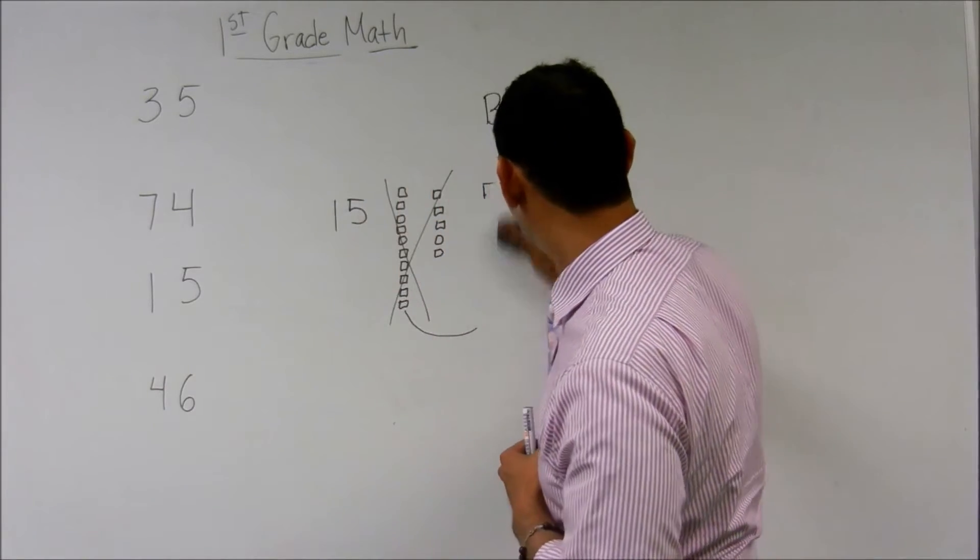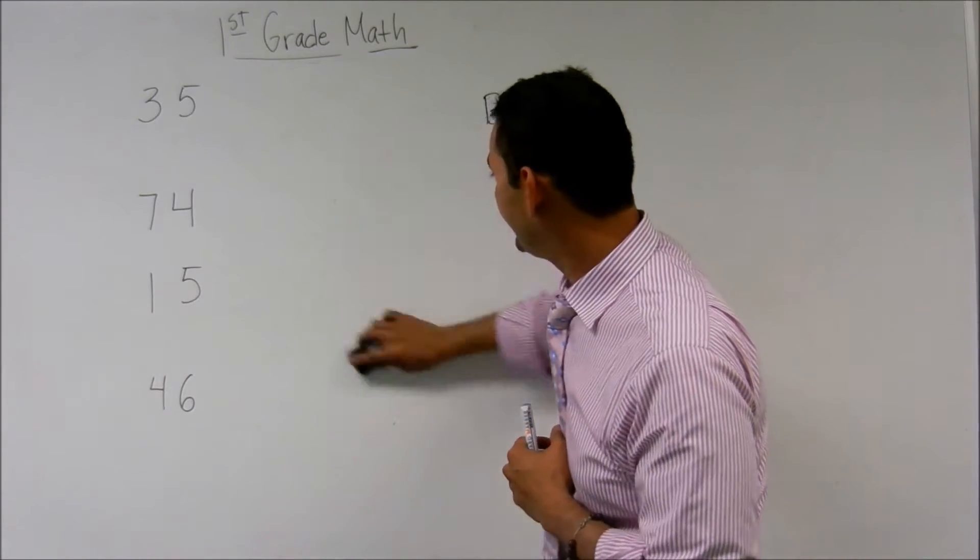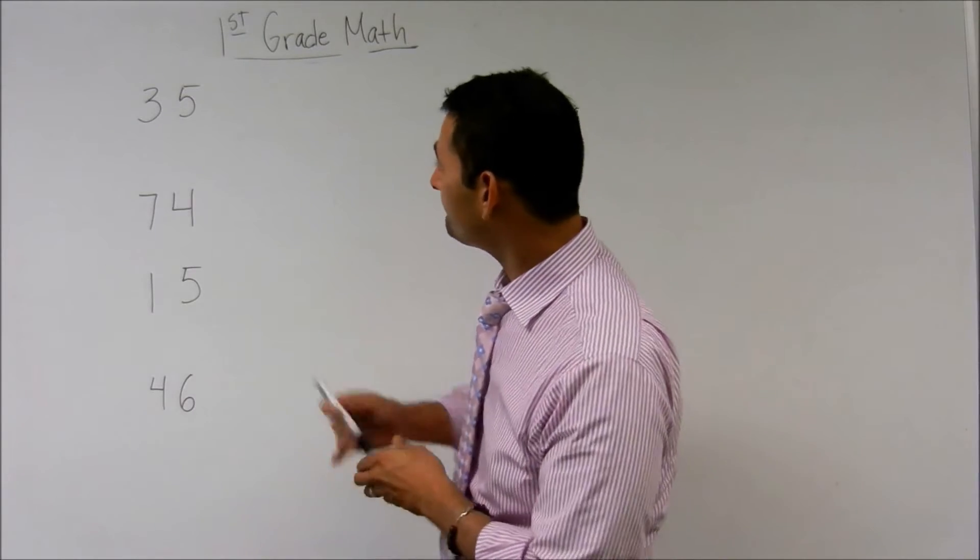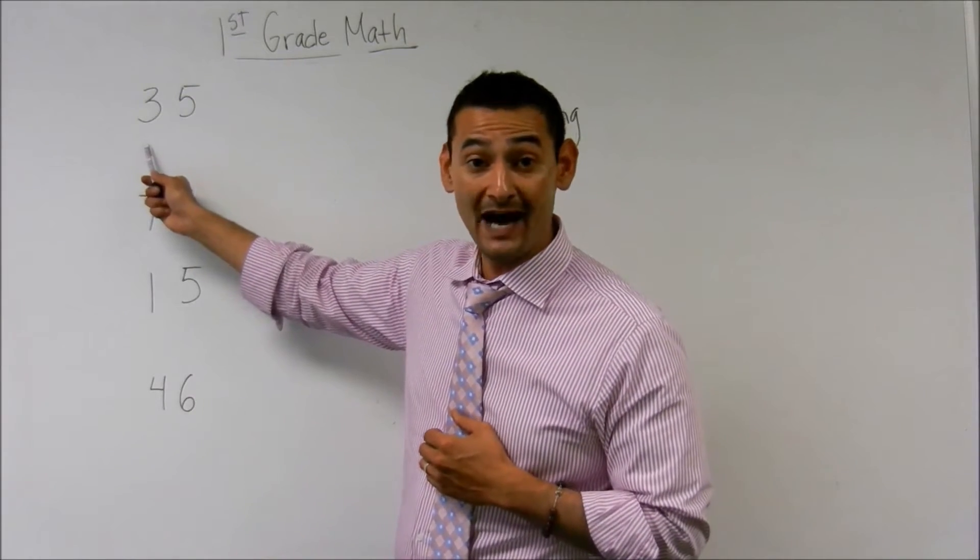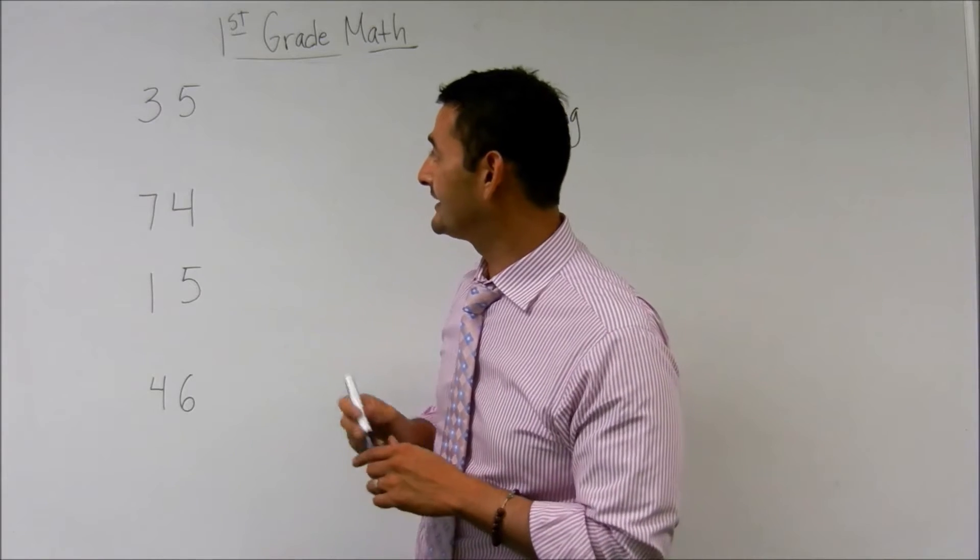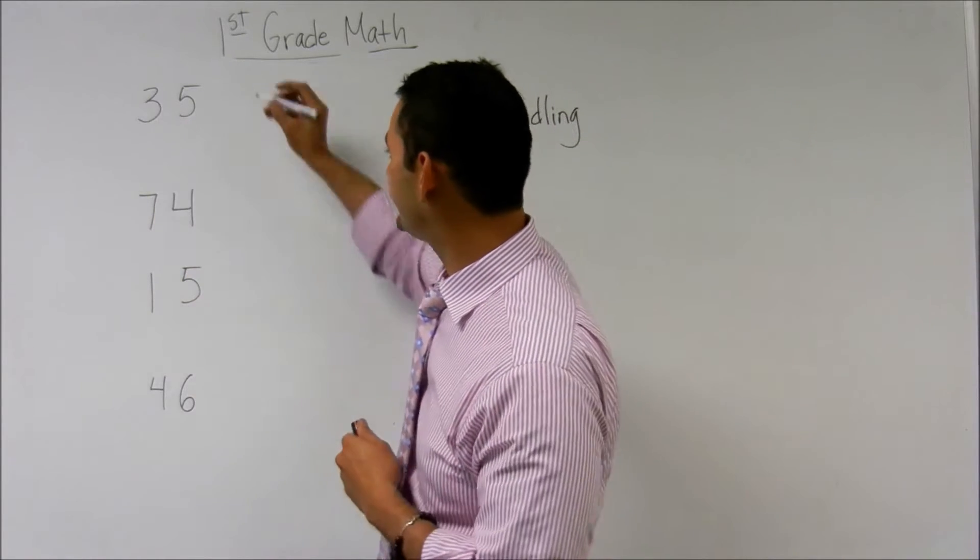Wonderful. So let me erase this, and let's do the same thing here. This is the number thirty-five. Let's go ahead and let's bundle up that three and make three tenths.